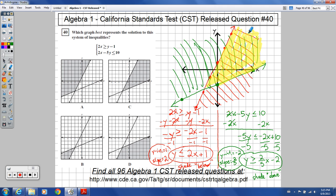This is the graph that would best represent that. Would be choice C because this is the stuff that lies in both solution sets. This is the stuff that they have in common, in other words. So number 40 looks like should be choice C.